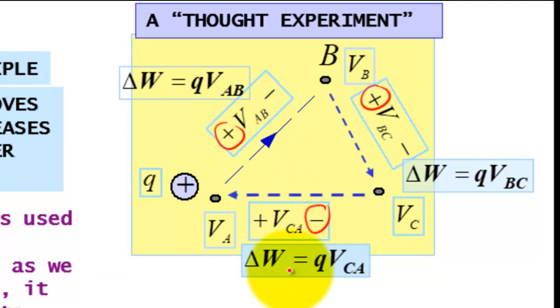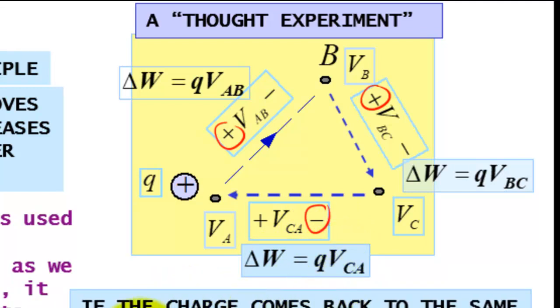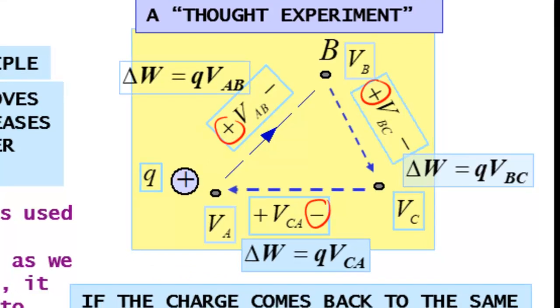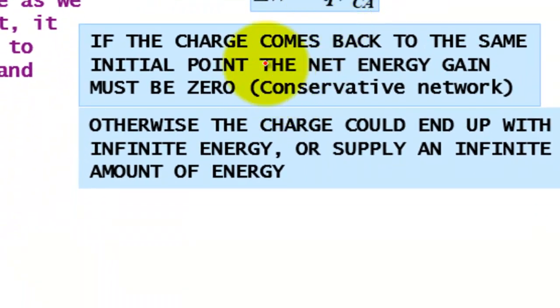The work is Q VCA. So if the charge comes back to the same initial point, the energy gain must be zero, obviously. Otherwise the charge could end up with infinite energy or supply infinite energy.